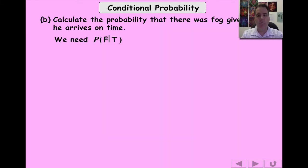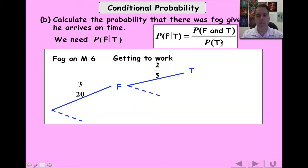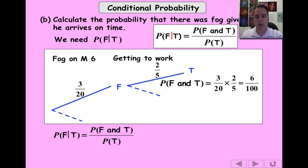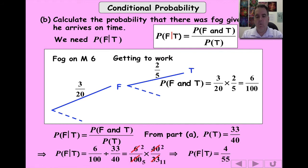Last part: what's the probability that given he arrives on time, it was foggy? In other words, P(F|T) — the probability it's foggy given he arrives on time. It's really important to get those in the right order. Using the formula: P(F|T) equals P(F and T) divided by P(T). From the tree diagram, P(F and T) is 6 out of 100. From part A, P(T) is 33 over 40. Dividing those gives us 4 over 55.